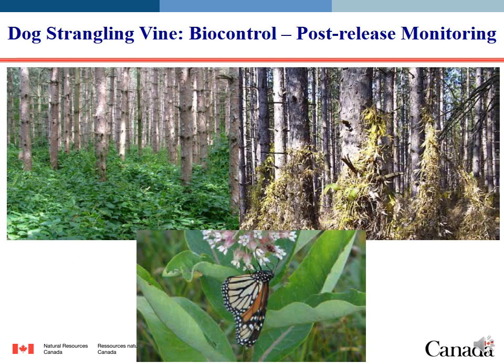Dog strangling vine is an invasive plant in the United States and Canada. It forms dense mats in forested stands that crowd out native plants and young trees, interfering with stand regeneration post-harvest and with forest management and recreation activities. The plant is in the milkweed family, so leaves and roots can be toxic, and native herbivores often avoid it, increasing grazing pressure on palatable native plants. The monarch butterfly — a species at risk in Ontario — is threatened because females oviposit on dog strangling vine, but larvae are unable to complete their development and die.